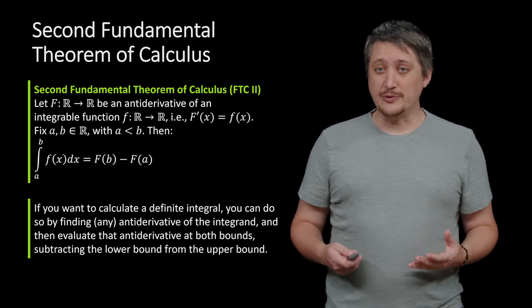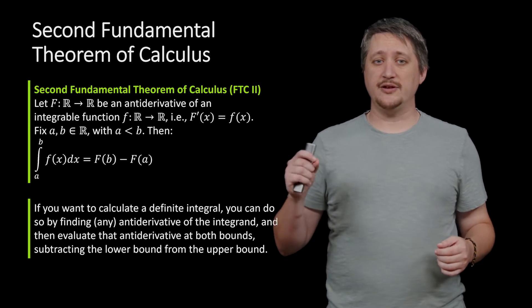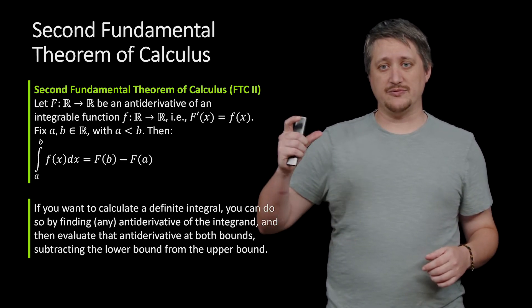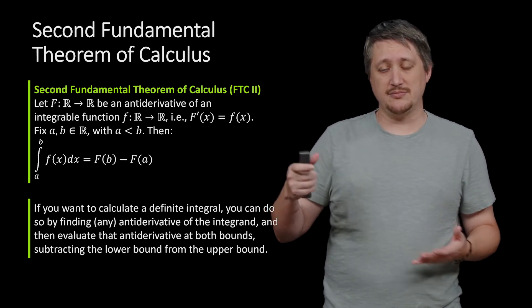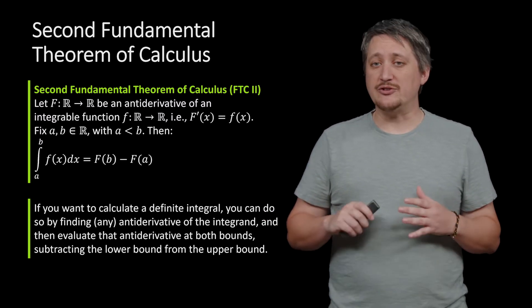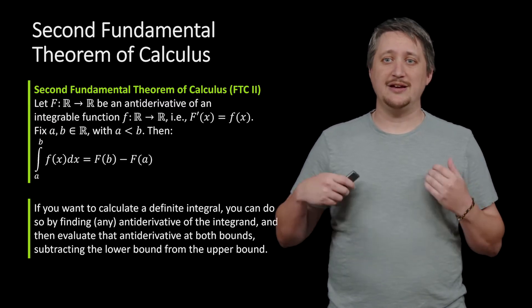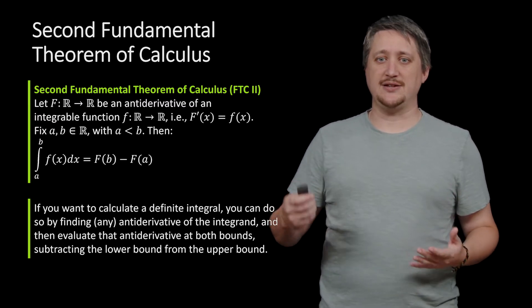What this is really saying is that in the first fundamental theorem we needed one of the bounds, the upper bound, to be a variable. Here we don't have that—we just have straight up values. So this is a normal 'evaluate from 3 to 17' kind of situation.